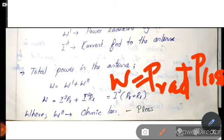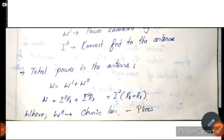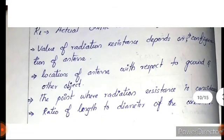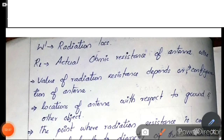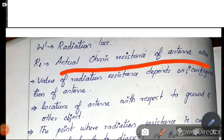Total power W is equal to I-squared into Rr plus Rl. Here Rr is radiation resistance and Rl is loss resistance. Rl is the actual ohmic resistance of the antenna wire, representing ohmic loss.